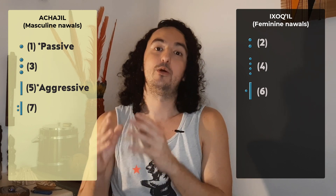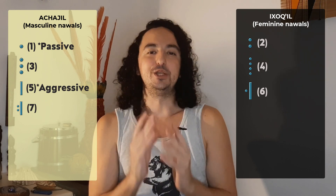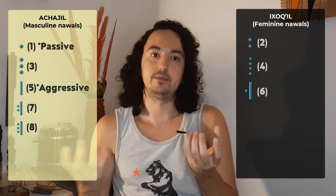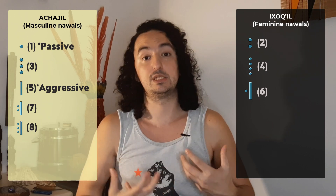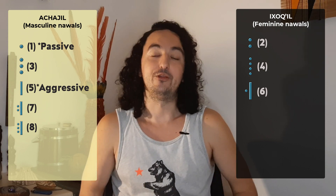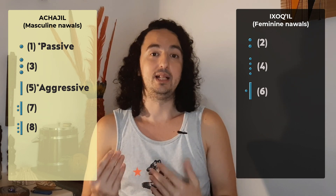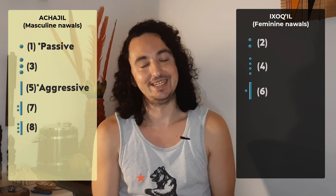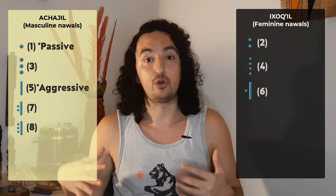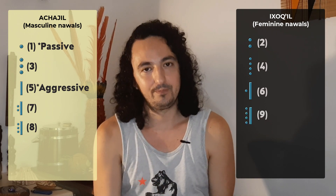Then we have Nawal number eight, which is also a masculine Nawal. It's the return, the water repeating the pattern but stronger — you're more prepared. It's an Achahil, another masculine Nawal. Then we have Belaer, Nawal number nine, which is the cold, what is hidden from sight, the underground waters, what is gestating. It's a feminine Nawal.